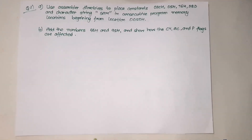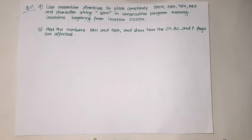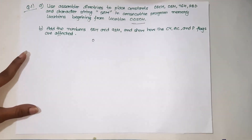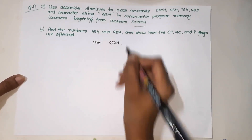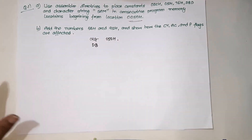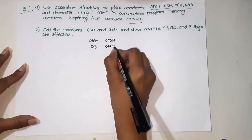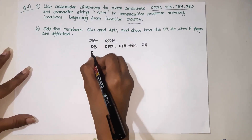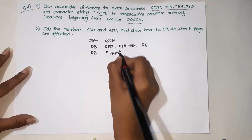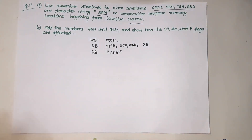Now here is an example for the PSW register. The question: use assembler directives to place constants 0FCh, 05h, 76h, 28d, and character string 'SAM' in consecutive program memory locations beginning from 0050h. The first thing is we have a starting location, and we have studied assembler directives — there is ORG which specifies the start of a memory location. So we write ORG 050h. Next we use DB (define byte) for the values 0FCh, 05h, 76h, 28, and the string 'SAM'.